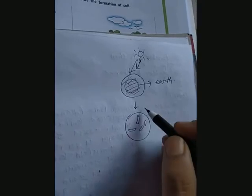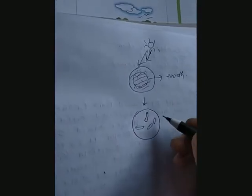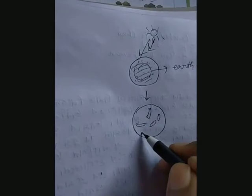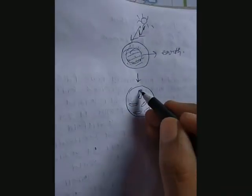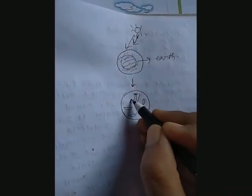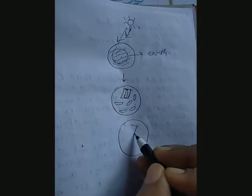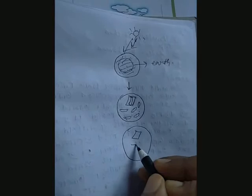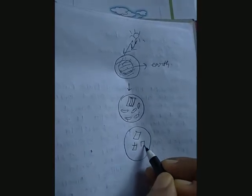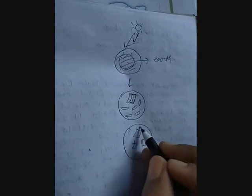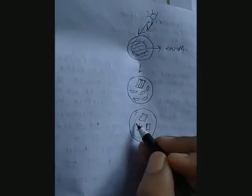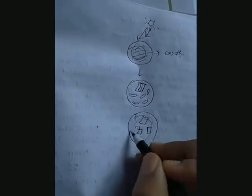At daytime it becomes warmed and at night it cools down. Due to this repeated process, cracks are formed and by that time these cracks become widened — increasing in length and width — and more deeper. The upper surface begins to break into small pieces.